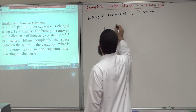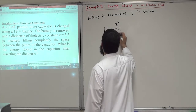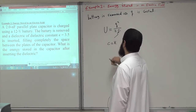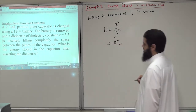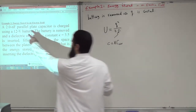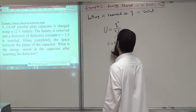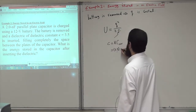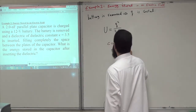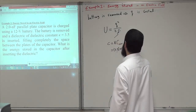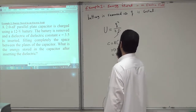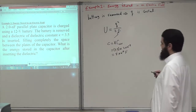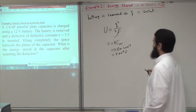So U equals Q squared over 2C. But C in this case equals κ (dielectric constant) multiplied by C-air. So C equals 3.5 multiplied by C-air, which is 2 × 10⁻⁹, giving C equals 7 × 10⁻⁹ farad. This is the capacitance of the capacitor when filled with the dielectric material.